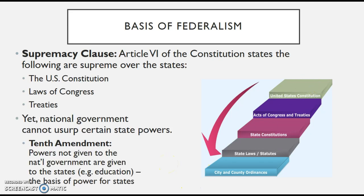Although the U.S. Constitution, laws of Congress, and treaties are supreme, it does not mean that state powers are gone — it does not mean the national government can usurp these powers. This comes right out of the Bill of Rights and our Tenth Amendment, which states that the powers not given to the national government are given to the states. If it's not given directly to the national government, the states have control over that — for example, education.